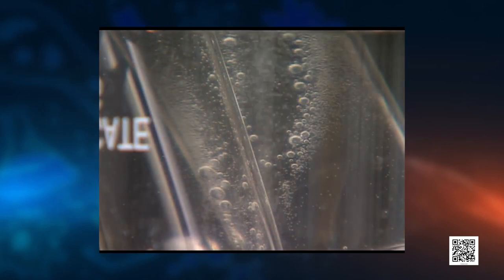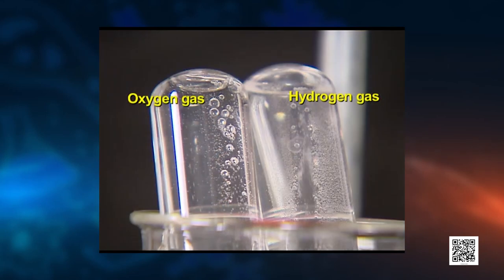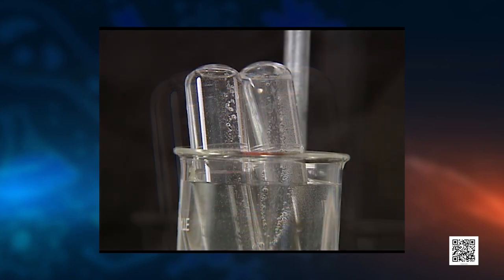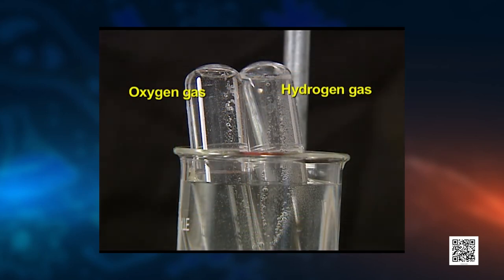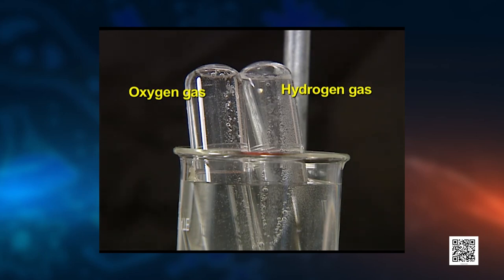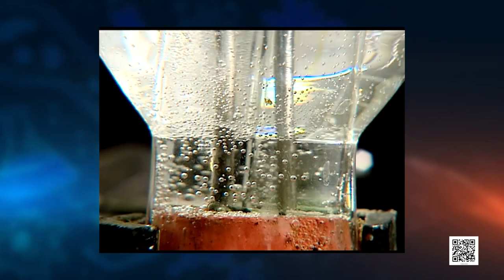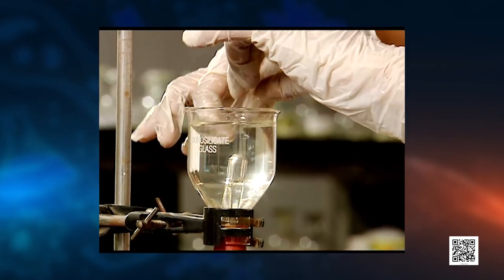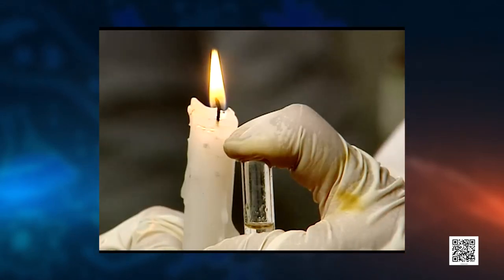You can see effervescence. Now we will test: how will you verify that the gases produced are oxygen and hydrogen? We will test these gases one by one, removing the test tubes carefully. When we remove the finger from the mouth of the test tube and place a burning splinter, a pop sound means the gas is hydrogen.